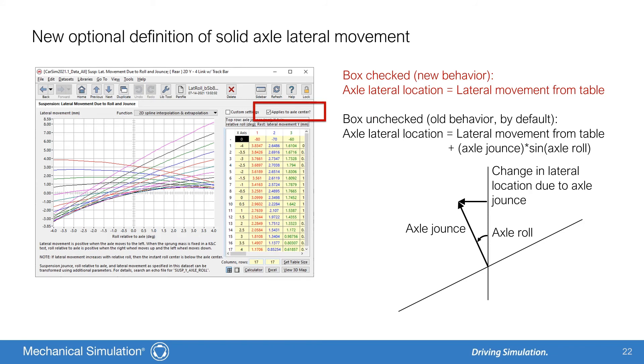Additionally, the solid axle lateral movement table supports a new option controlled by a checkbox on the solid axle lateral movement screen. When this is on, the solid axle lateral movement table completely specifies the kinematical lateral displacement of the axle center point relative to the sprung mass. When this is off, the solid axle lateral movement table contributes partly to the kinematical lateral displacement of the axle center. There is also the lateral contribution from the axle jounce in the direction implied by axle roll. Off is the default setting and corresponds to the definition used in previous versions.